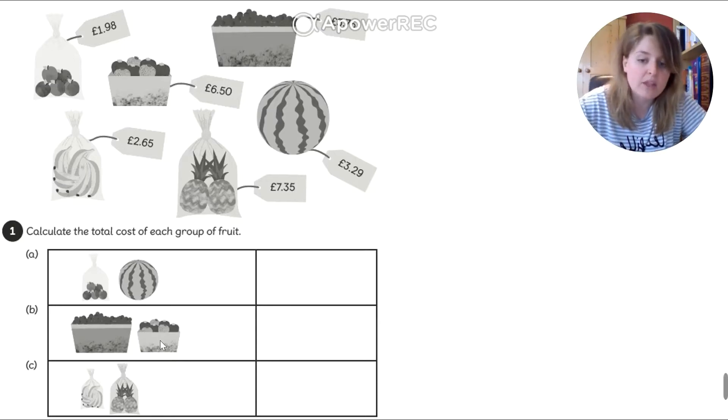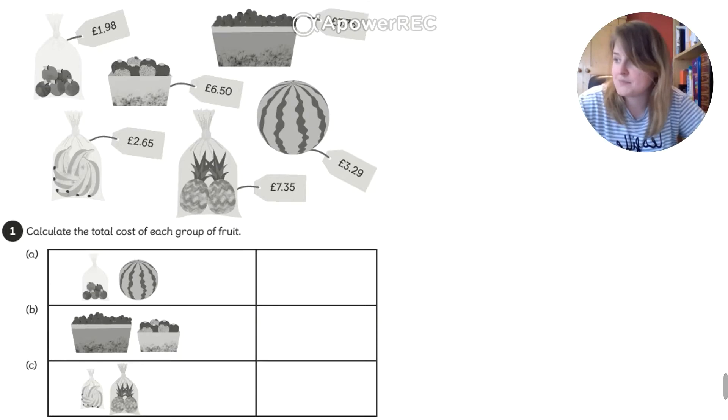As you can see here I've got shopping list A, shopping list B and shopping list C. And you need to work out the cost of both of these items together. So pause the video here. Have a go yourself or do some with me. So if you feel like you can do it yourself do it now. Otherwise pause it. Do some with me.